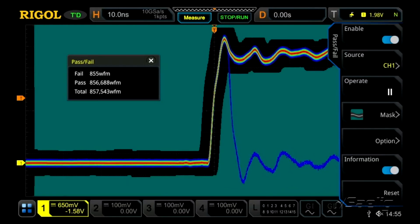In this particular setup, the instrument can capture more than 100,000 waveforms every second and process them against the pass-fail mask in real time.